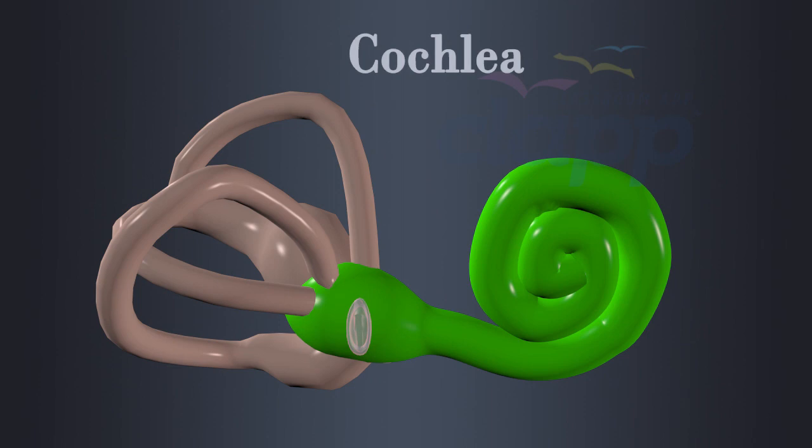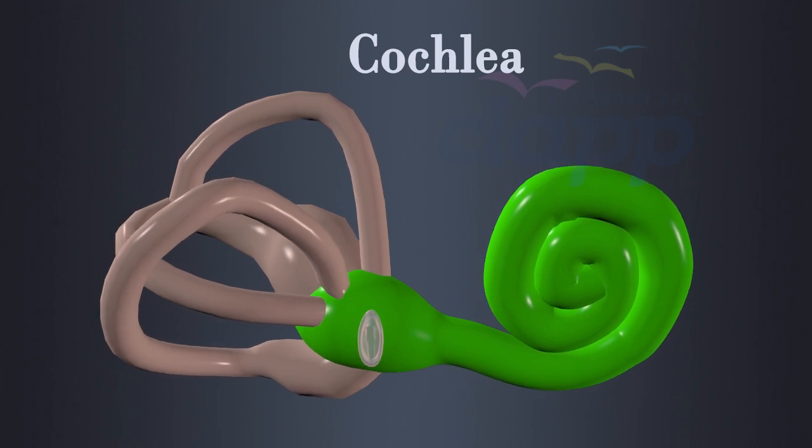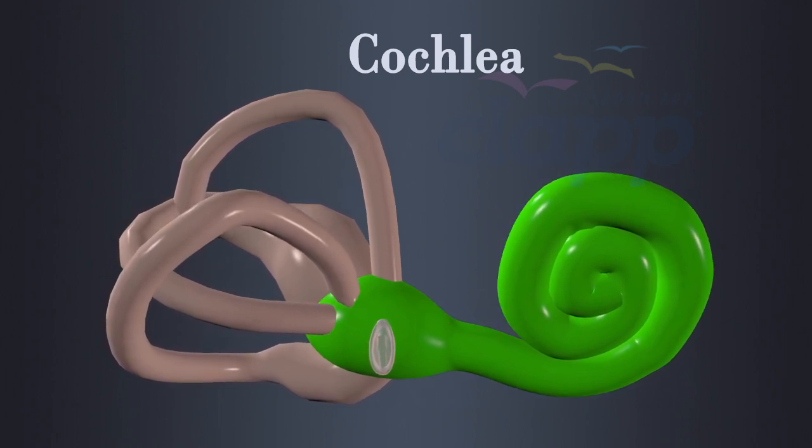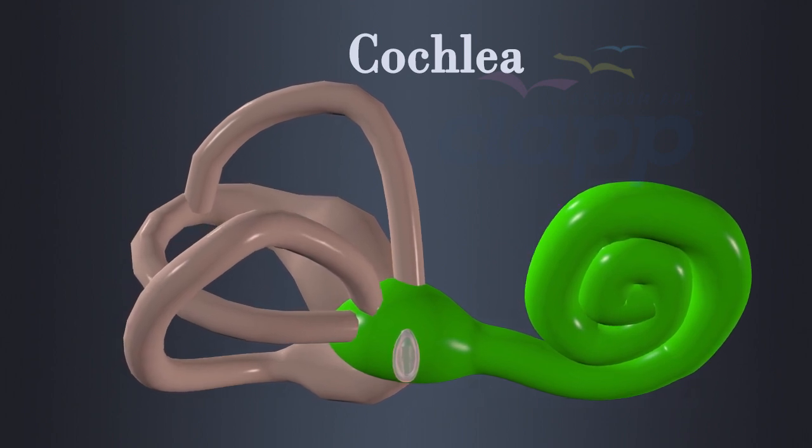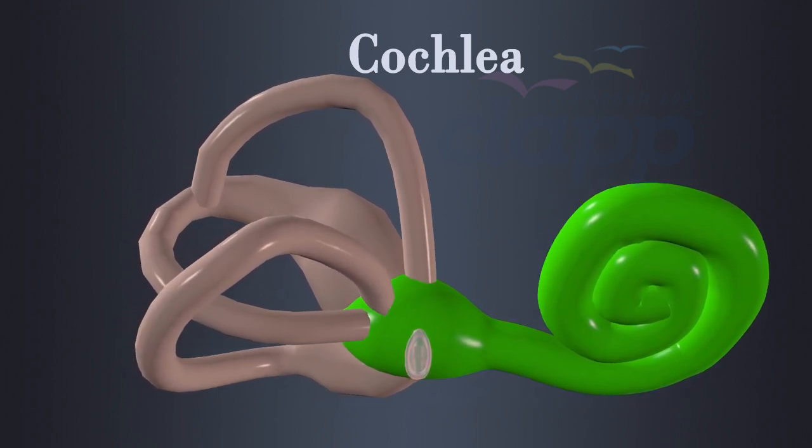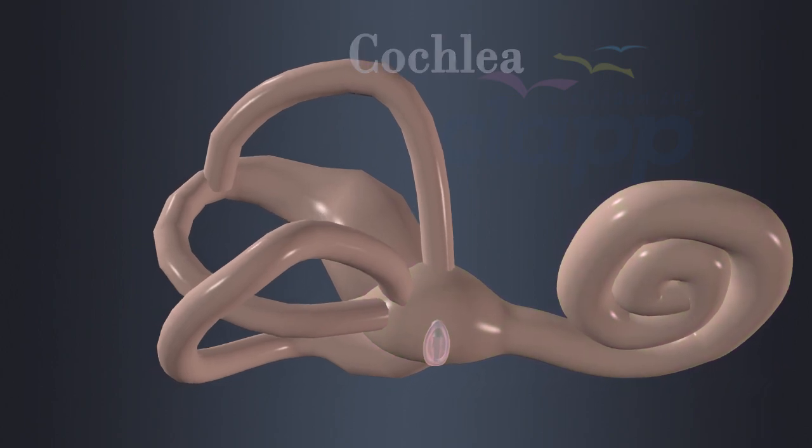The cochlea is a spiral-shaped, fluid-filled structure resembling a snail shell. It is the primary organ of hearing and converts sound vibrations into electrical signals that the brain can interpret as sound. Cochlea is a complex and highly specialized structure with several key components that play a crucial role in hearing process.